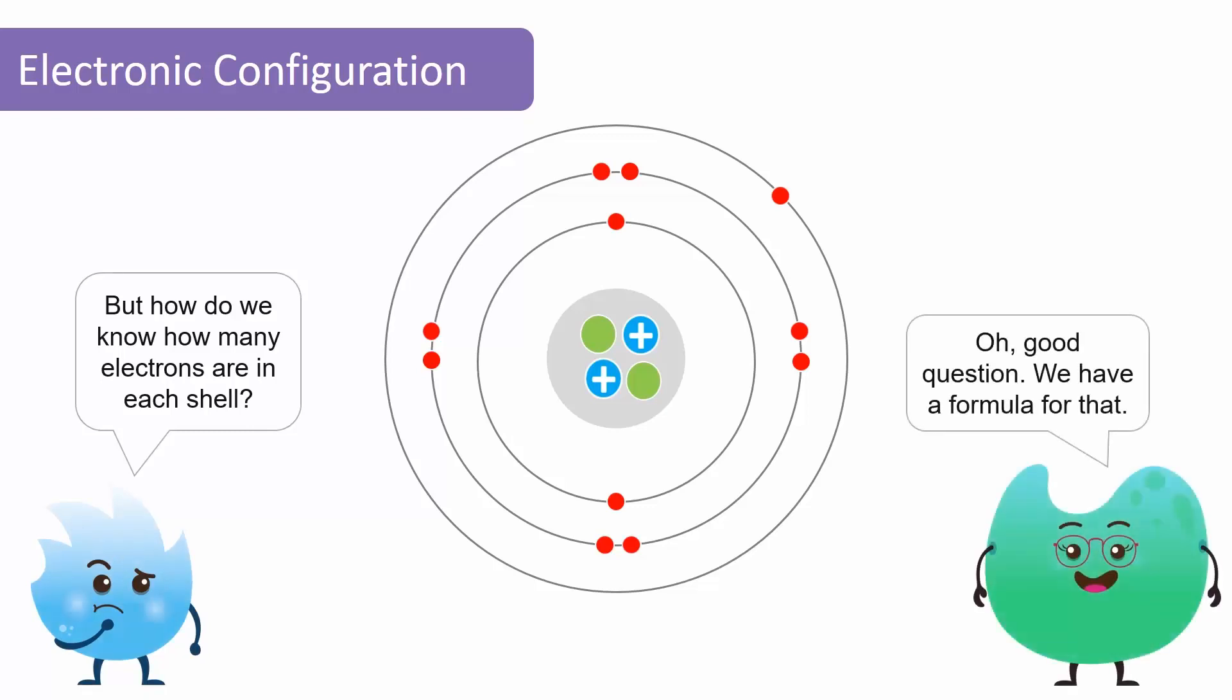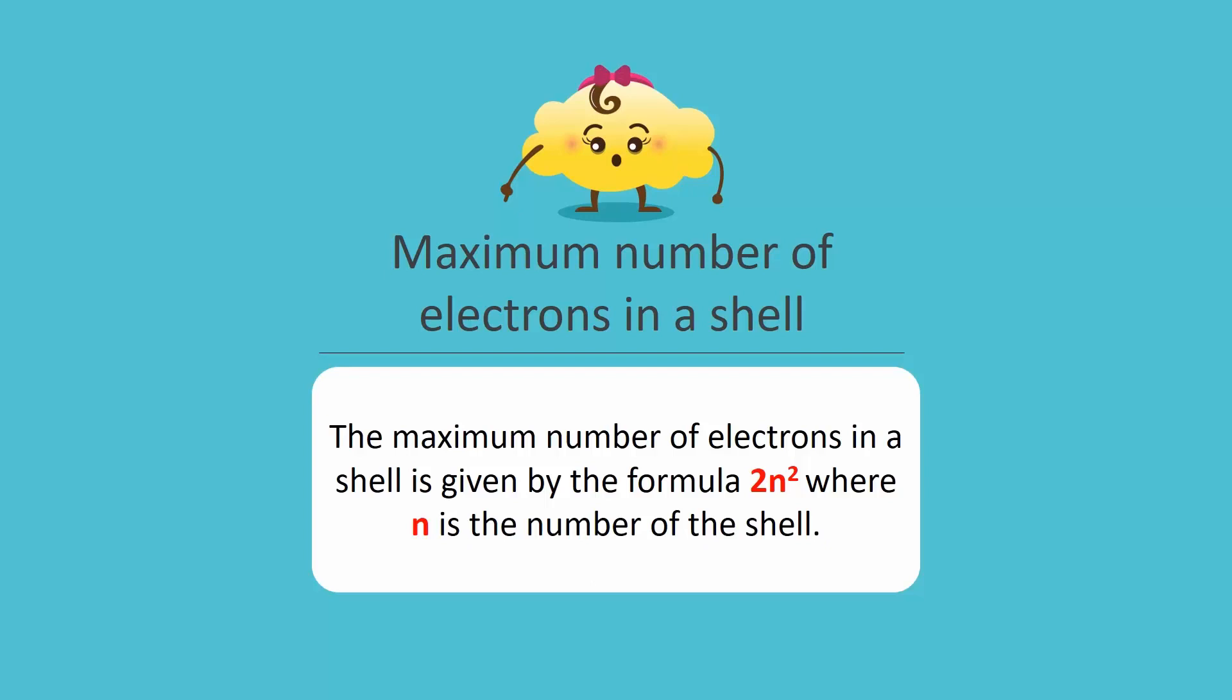Good question. We have a formula for that. The maximum number of electrons in a shell is given by the formula 2n squared, where n is the number of the shell.